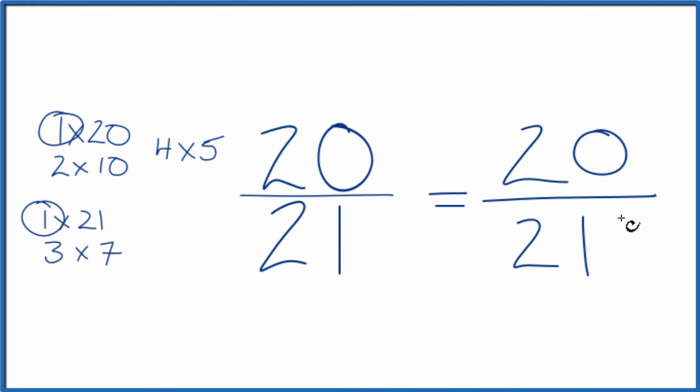So we are back where we started. What that means is that the fraction 20 21sts, it's already simplified. We can't reduce or simplify this any further.